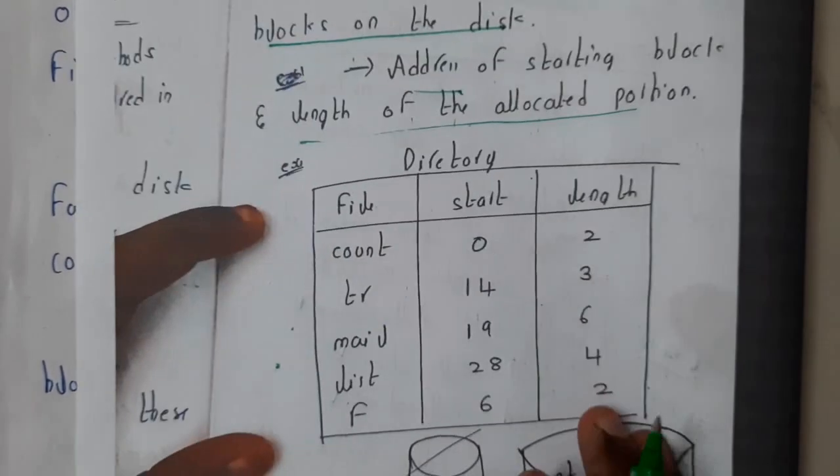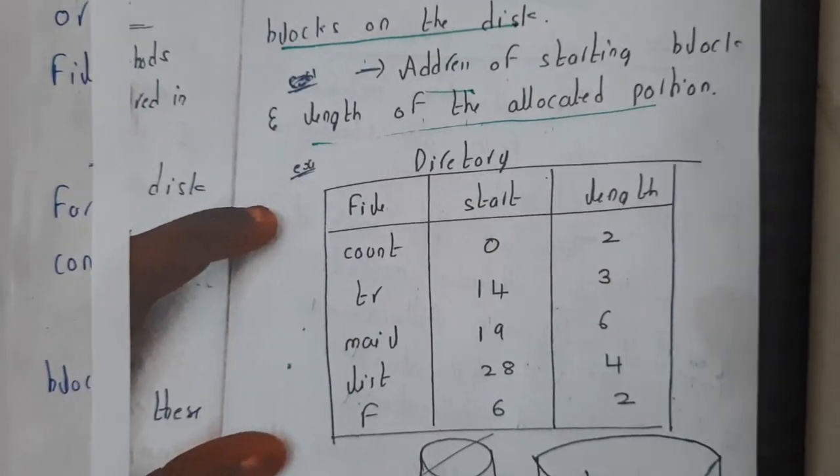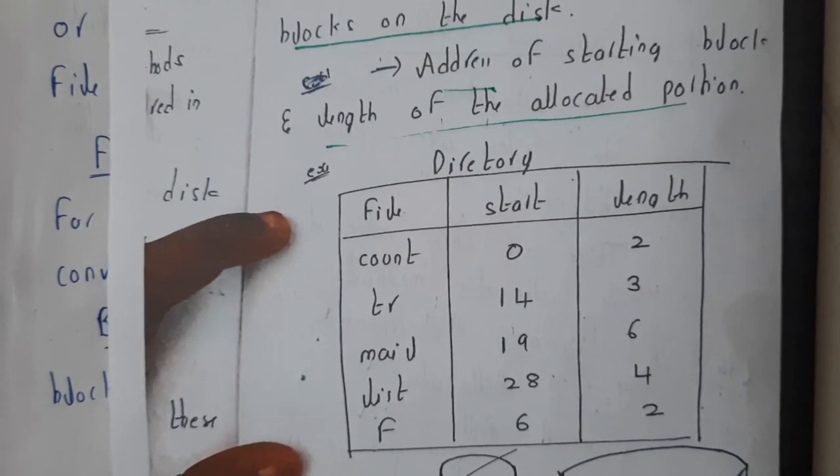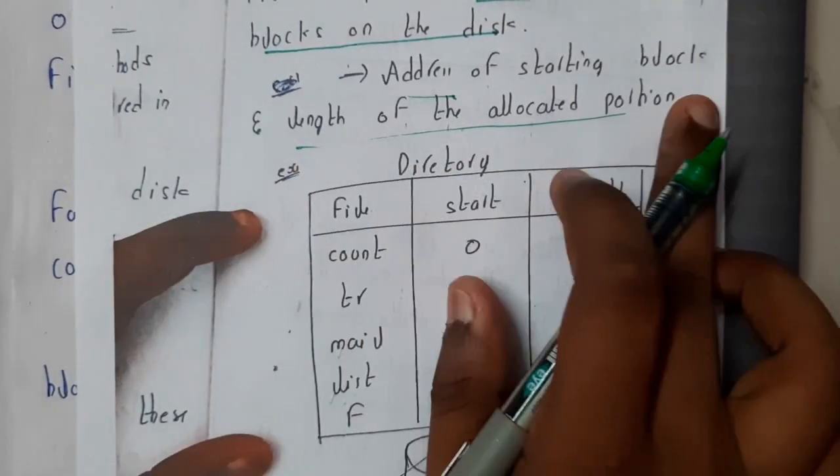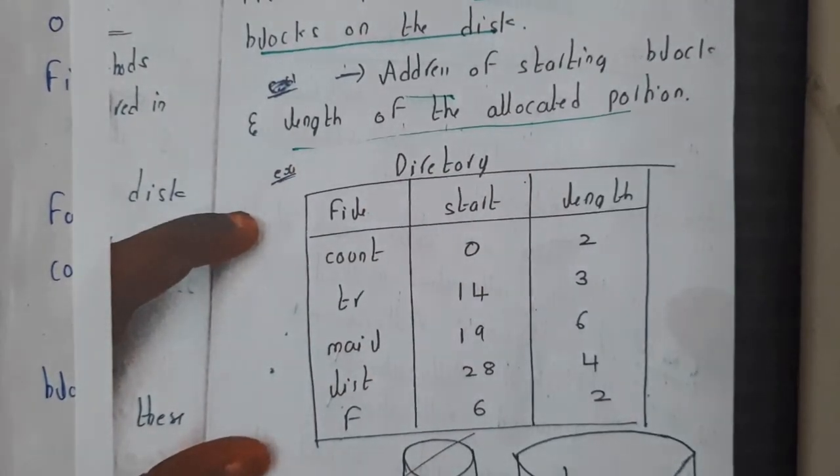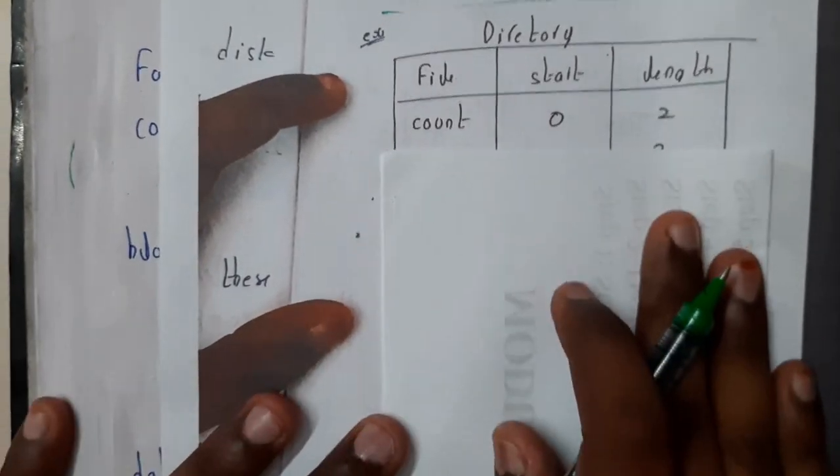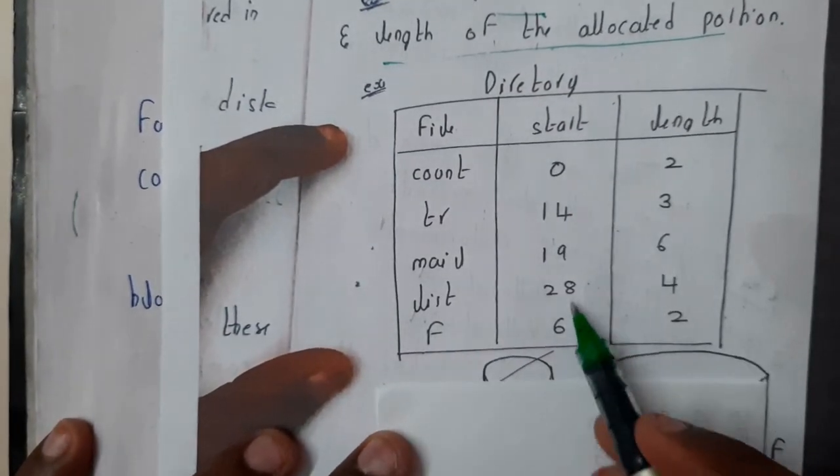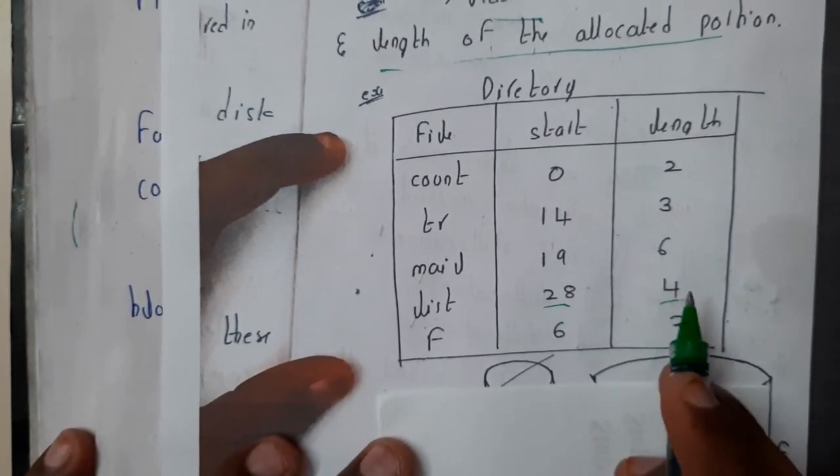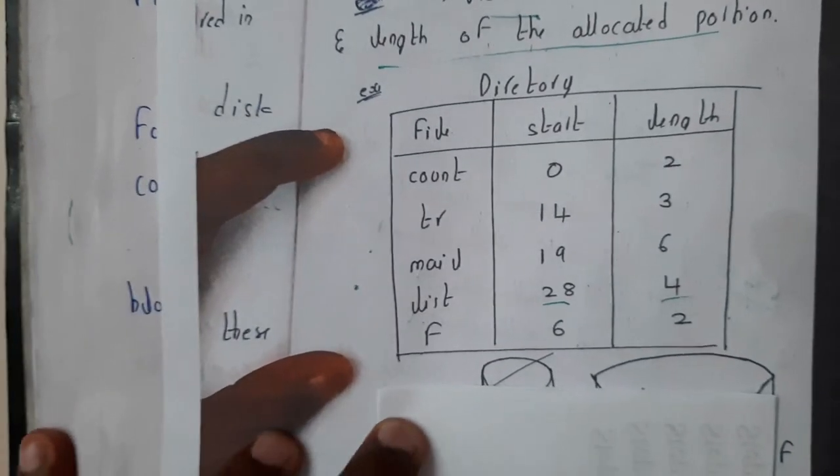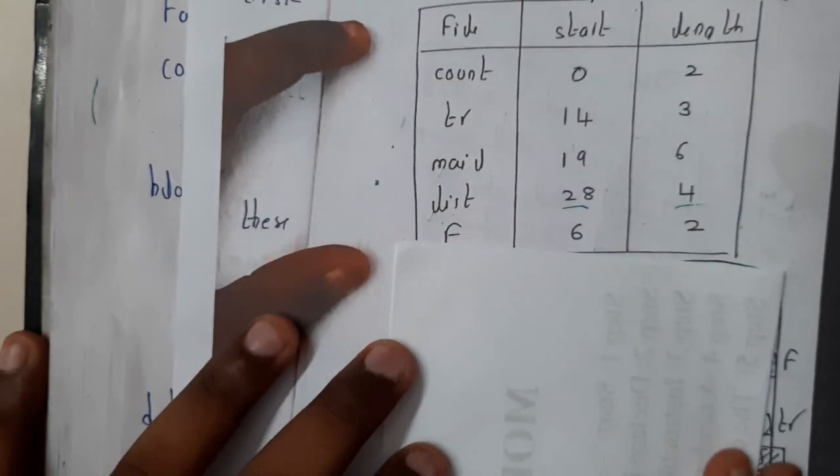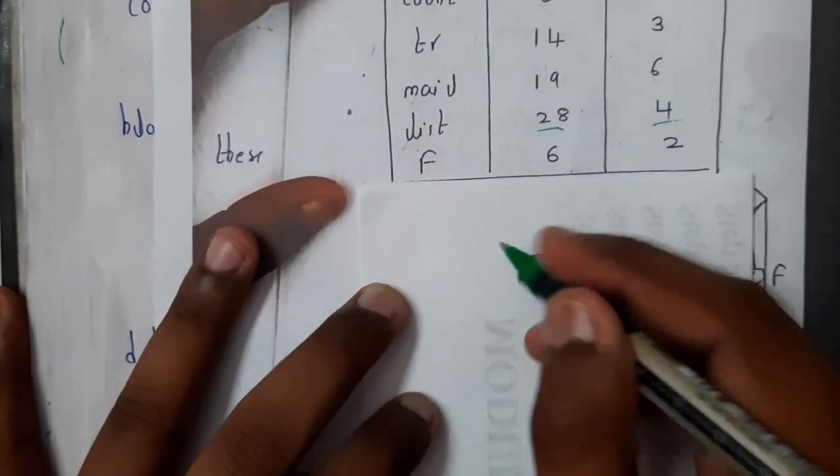For example, let us take a small directory structure. In that we are having the file name, starting position, and the length of the allocation. Now let us try to draw this. Initially it is ending at 28 plus 4 - what is 28 plus 4? It is 32, right? So we need to have at least 35 blocks total.